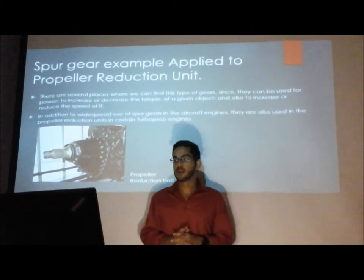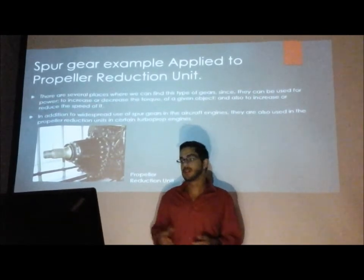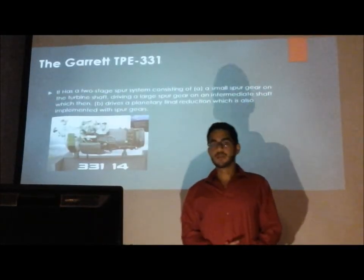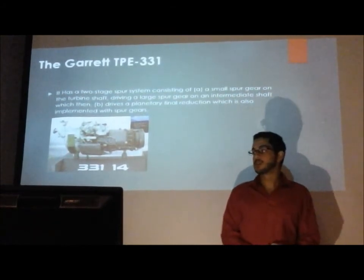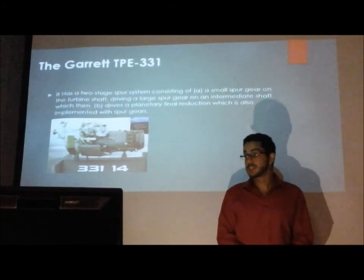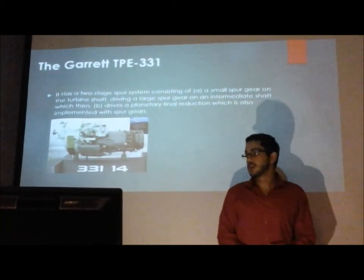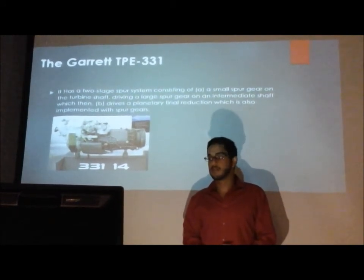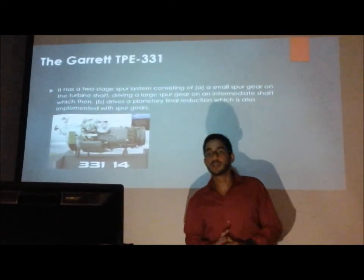They are used in the propeller reduction units in certain engines. One example of this is the Garrett TPE331, a turbo propeller engine originally designed by Honeywell Aerospace in 1999. It has a two-stage spur system consisting of a small spur gear on the turbine shaft, driving a large spur gear on an intermediate shaft, which then drives a planetary final reduction also implemented with spur gears.